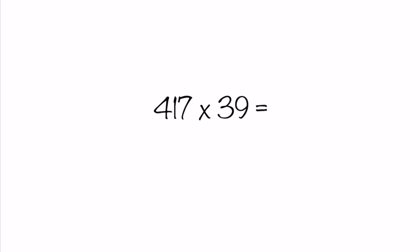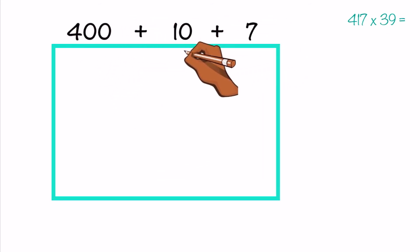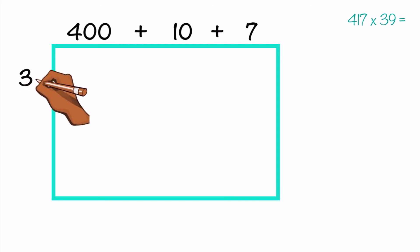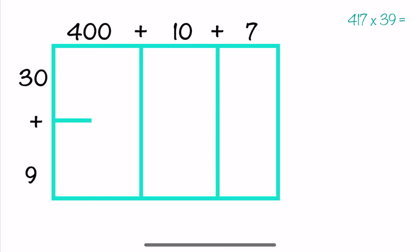Same first step — draw a box, but make the top a little longer since one of our numbers has more digits. Then we're going to write both numbers in expanded form. Everywhere you see a plus sign, draw your line. And we're ready to multiply. We're going to multiply the numbers along the top times 30, and then the numbers along the top times 9. I'm going to move a little bit faster this time.